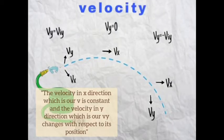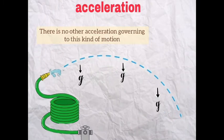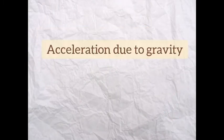We can conclude in this experiment that the velocity in x-direction, which is our Vx, is constant, and the velocity in y-direction, which is our Vy, changes with respect to its position. There is no other acceleration governing this kind of motion, but only the acceleration due to gravity.